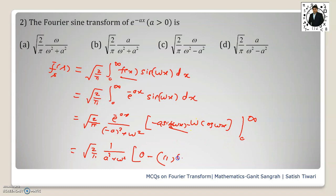So minus ω is here. This is minus minus gives plus, and we will have the answer as under root of 2/π, ω upon a² plus ω². So your option a is correct option.